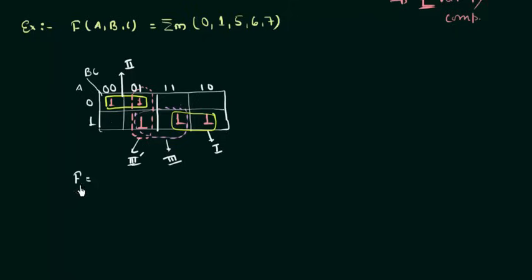So for case one, we are having 1 plus 2 plus 3. So 1 is what? AB. Similarly, 2 is A complement and C is changing from 0 to 1 and B is not changing. So we are having B complement. And the 3 is your A. B is changing from 0 to 1. So we are left with C. So this is what we are having for the case one.